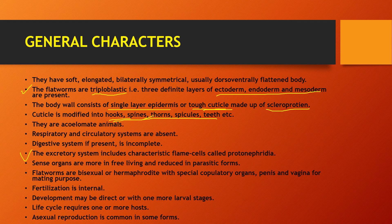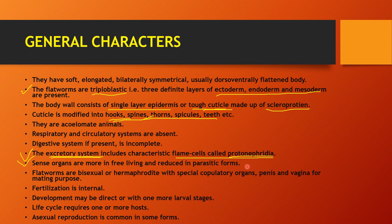The next important character in Platyhelminthes is the excretory system, which consists of flame cells called protonephridia. Now, regarding sense organs — they are more developed in free-living forms of Platyhelminthes, but can be reduced in parasitic forms.